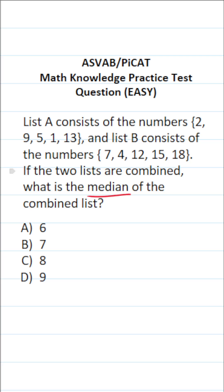The median refers to the middle number. The first thing we want to do to find the median is to take both sets of numbers and create one big combined list from them. As we create that combined list, in order to find the median, we're going to arrange these numbers from least to greatest.